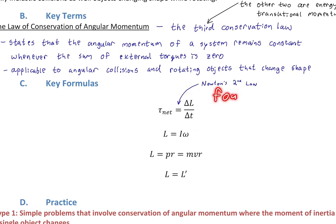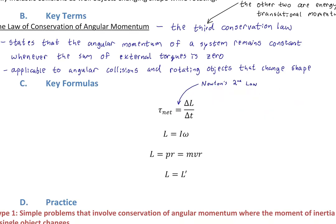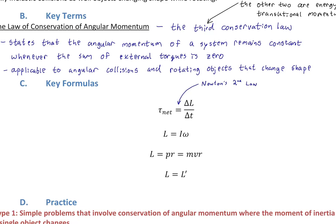This is the fourth and final expression of Newton's second law. We've come to the third and final conservation law. This is a moment where we have accumulated a large amount of fundamental ideas. The law states net torque equals delta L over delta t — change in angular momentum over change in time — where L is angular momentum.